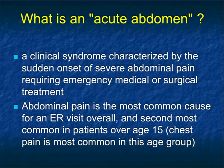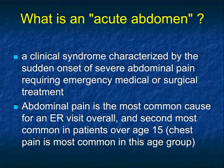If we just take a step back and go through some of the basics: what's an acute abdomen? It's a clinical syndrome characterized by the sudden onset of severe abdominal pain requiring medical or surgical treatment in the emergency setting. Basically, we're dealing with something that potentially can be a true crisis — we need to make and come up with an answer now. Abdominal pain is the most common cause for an ER visit overall, and second most common in patients over age 15, with chest pain being the most common.